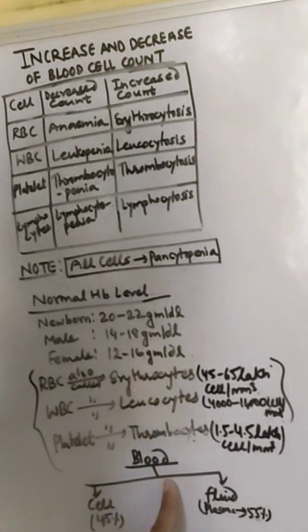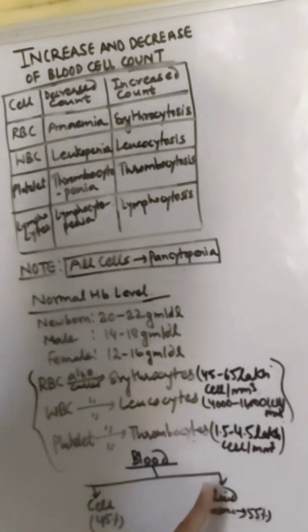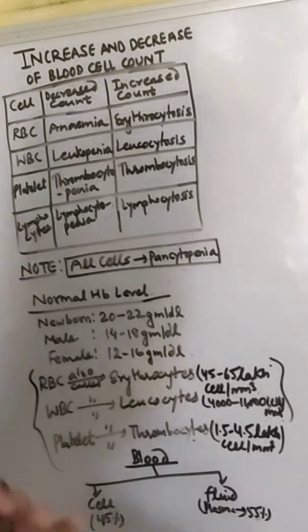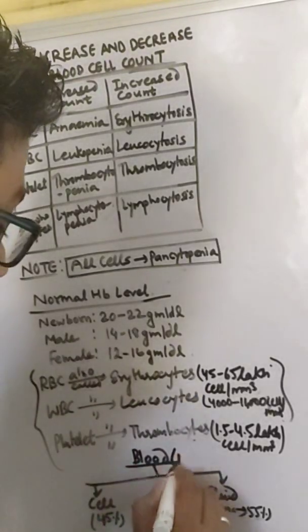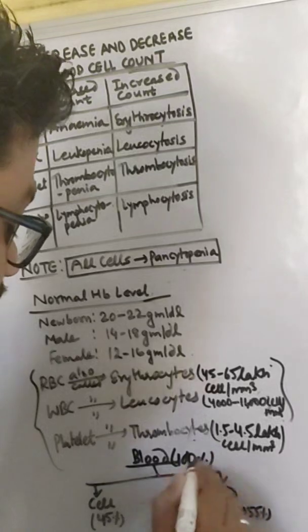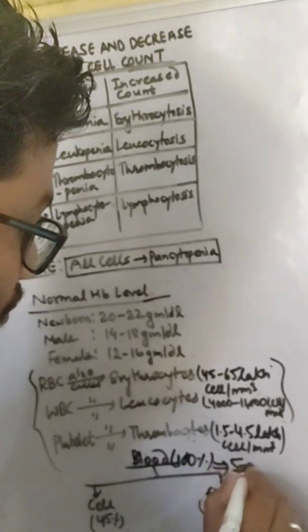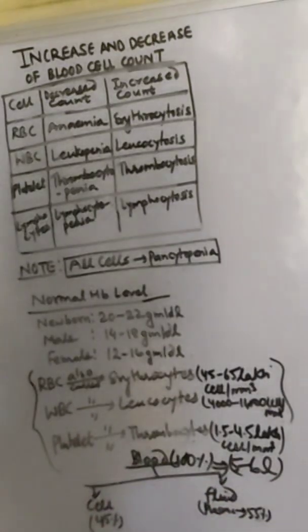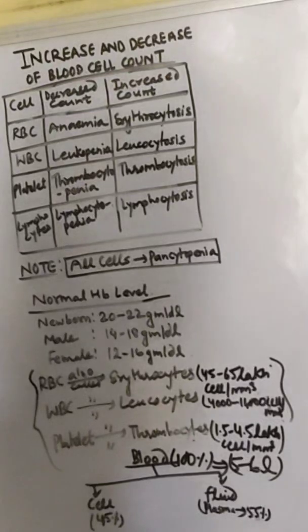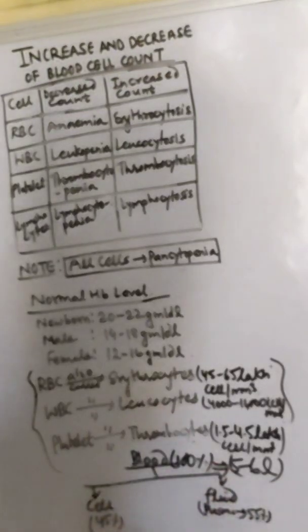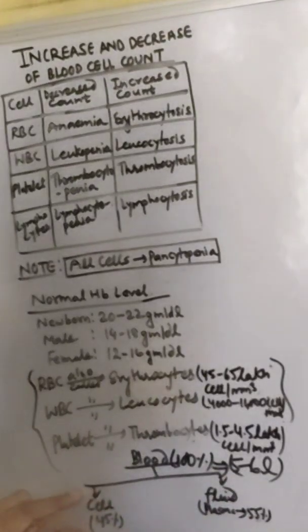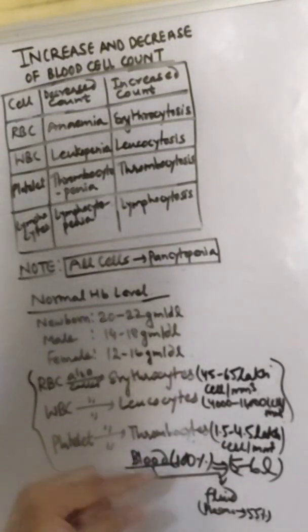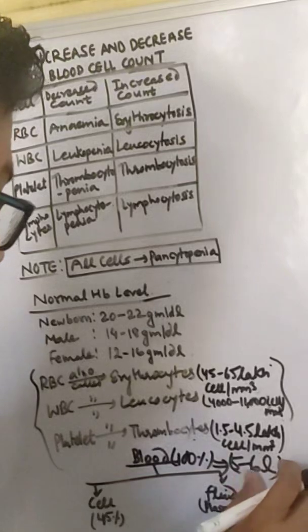Blood can be composed into cell and fluid. Cell consists of 45% if you consider blood as 100%, and we know that 5 to 6 liters blood consists of human body, 5 to 6 on average. So if you consider, then blood cell consists of 45% if you consider it 100%.